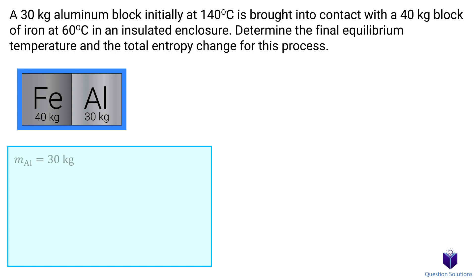Let's start by writing down what we know. The aluminum block is 30 kilograms and is at 140 degrees Celsius. The iron block is 40 kilograms and is at 60 degrees Celsius. We also need the specific heat of aluminum and iron.